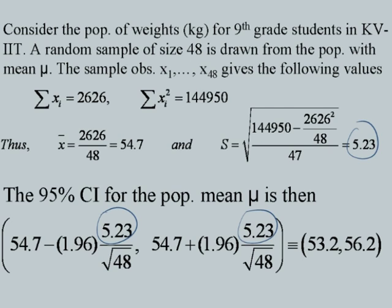Consider the population of weights for 9th grade students in KVIIT. A random sample of size 48 is drawn with mean mu. From the given X-bar and summation Xi-squared, we compute X-bar and the sample SD. The 95% confidence interval for the population mean mu is then computed using the large-sample formula, replacing sigma with the sample standard deviation S, giving the required 95% confidence interval.